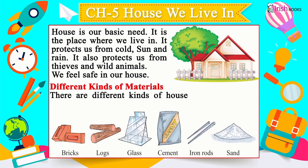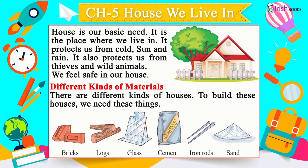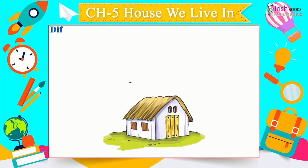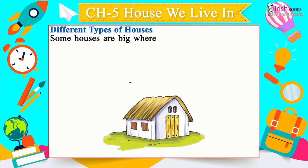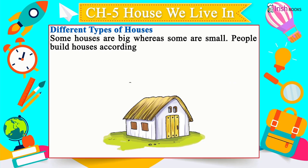Different Kinds of Houses: To build houses we need bricks, locks, glass, cement, iron rods and sand. Some houses are big, some are small — people build houses according to their needs.